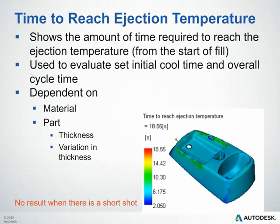The Time to Reach Ejection Temperature plot shows the amount of time required to reach the ejection temperature from the start of fill. This can be used to evaluate and set an initial cool time and get an indication of your overall cycle time. It depends mainly on the material as well as part thickness and variation in thickness. Like the quality prediction plot, this will not be generated if you get a short shot, so if you don't see it, make sure your part actually filled.